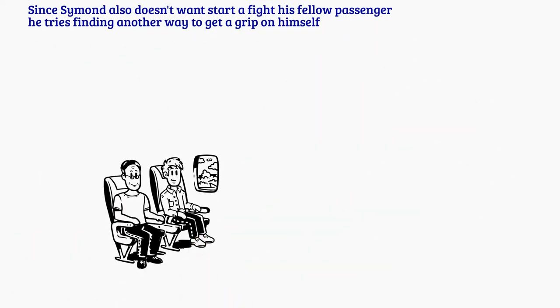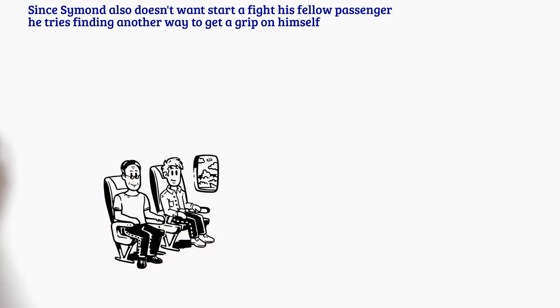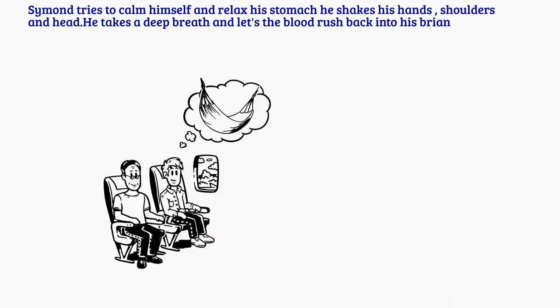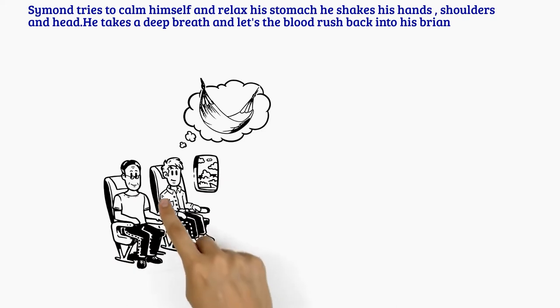Since Simon also doesn't want to start a fight with his fellow passengers, he tries finding another way to get a grip on himself. Simon tries to calm himself and relax his stomach. He shakes his hands, shoulders, and head.